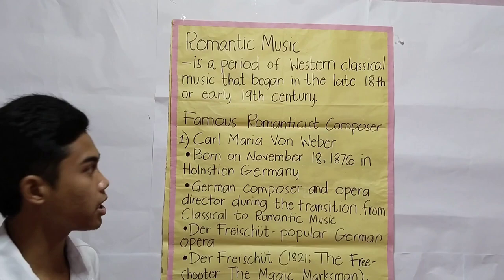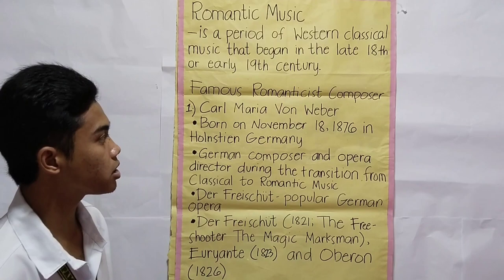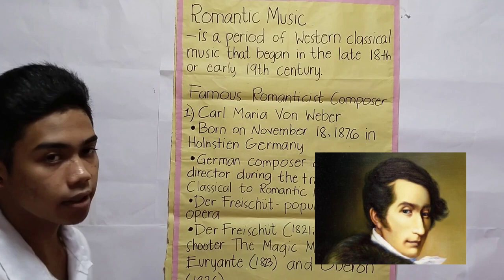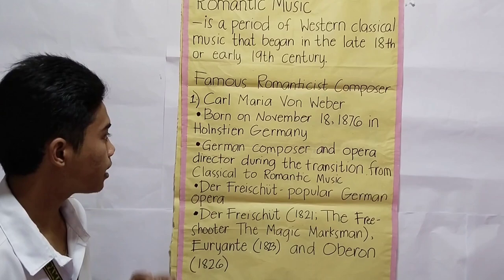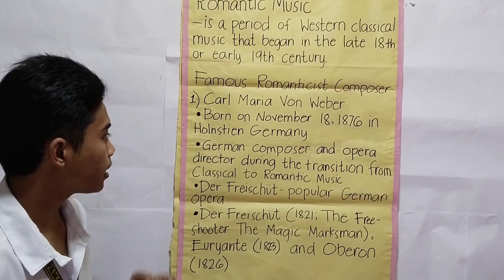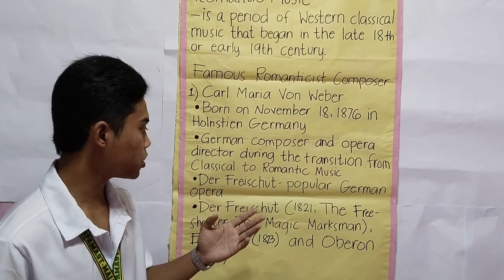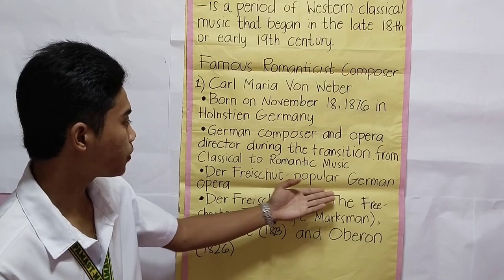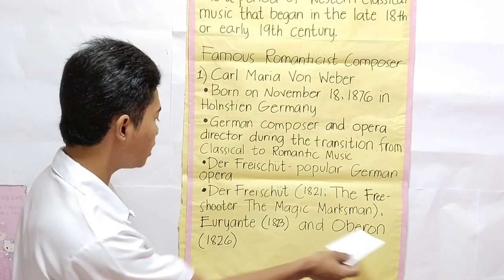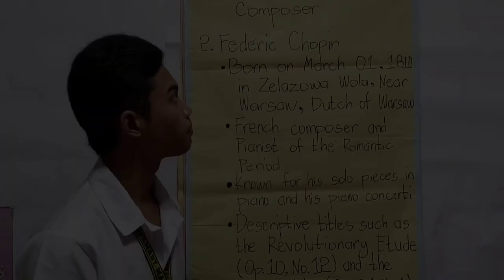The first famous Romanticist composer is Karl Maria von Weber, born on November 18, 1786 in Holstein, Germany. He is a German composer and opera director during the transition from classical to Romantic music. His famous composed artworks include Der Freischütz, a popular German opera (1821), also known as The Free Shooter or The Magical Marksman; Euryanthe (1823); and Oberon (1826).